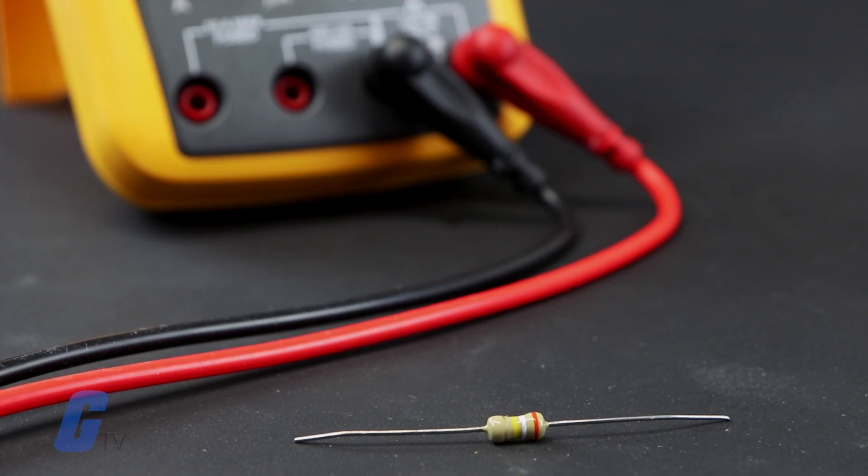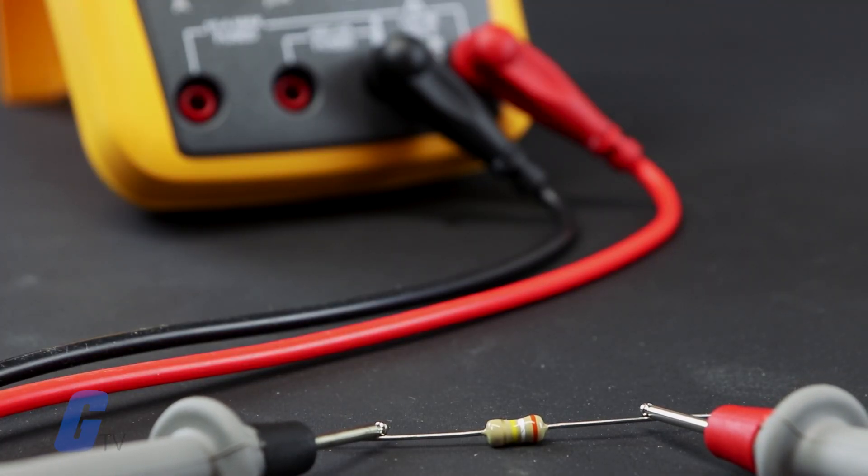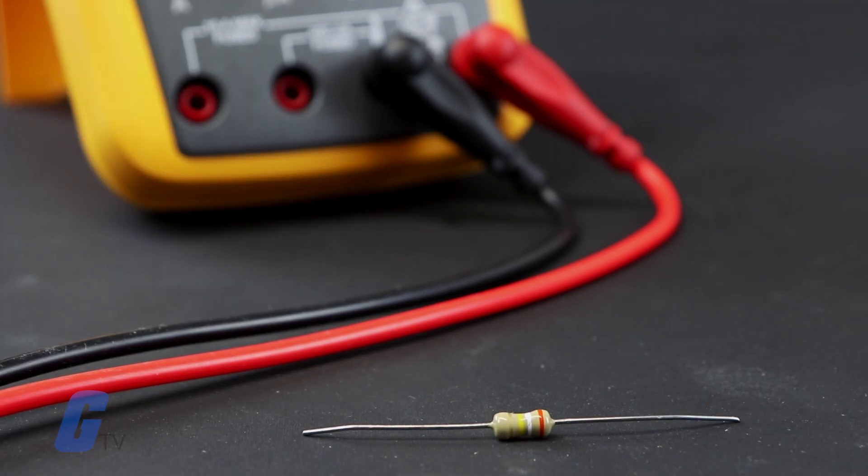To test, place one probe on each end of the circuit or component that you would like to test. Since resistance is non-directional, it does not matter which probe goes where.